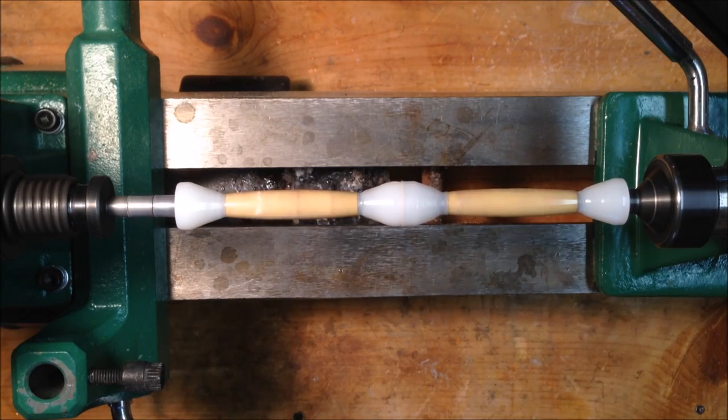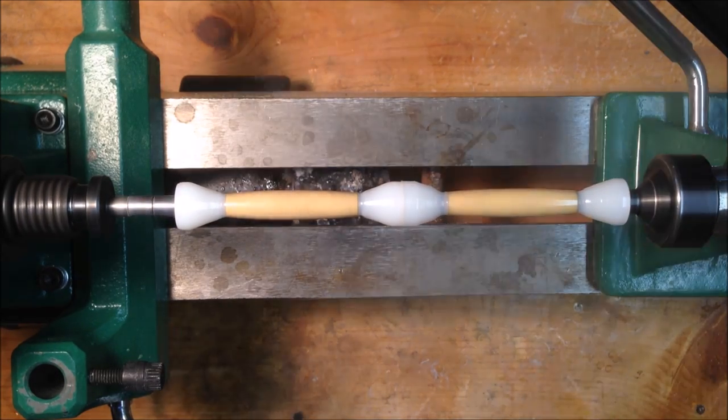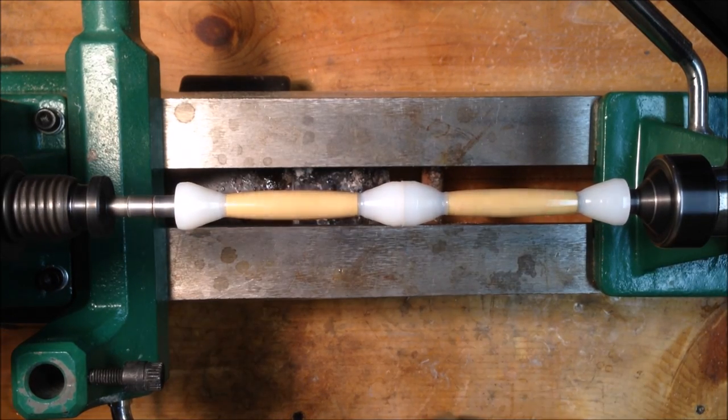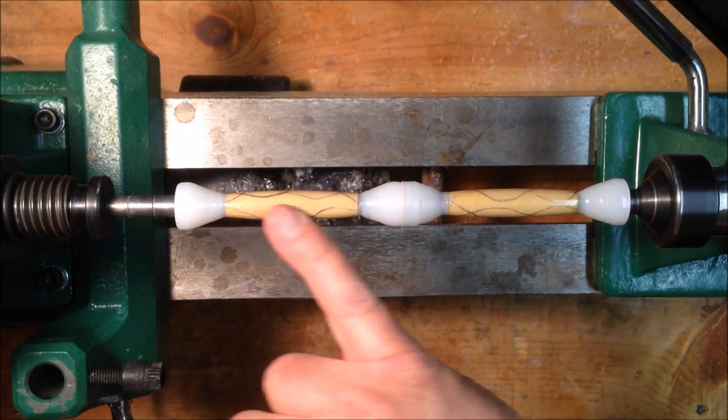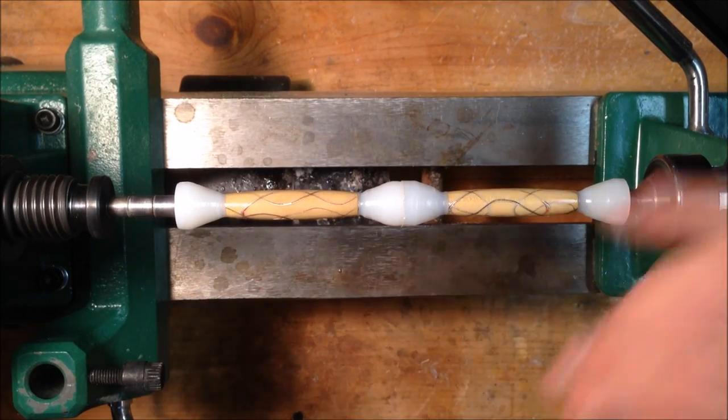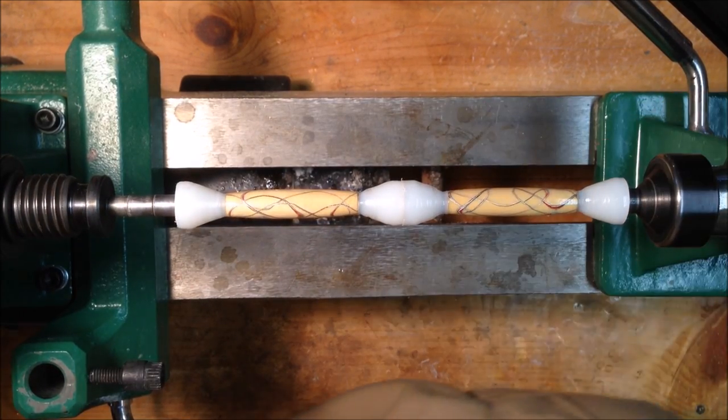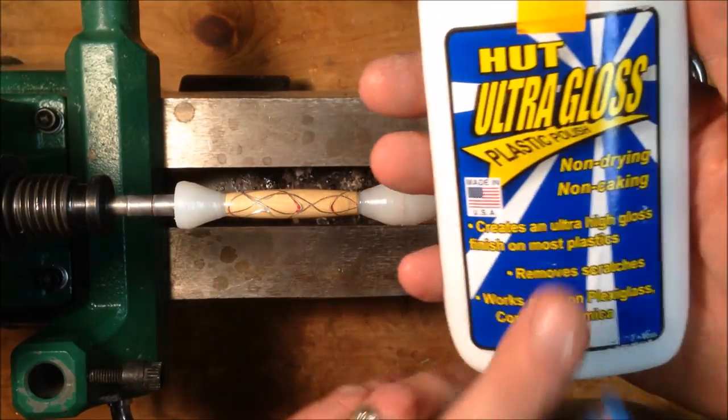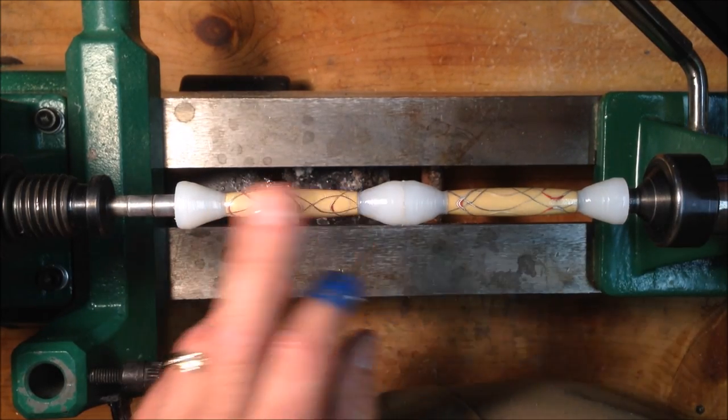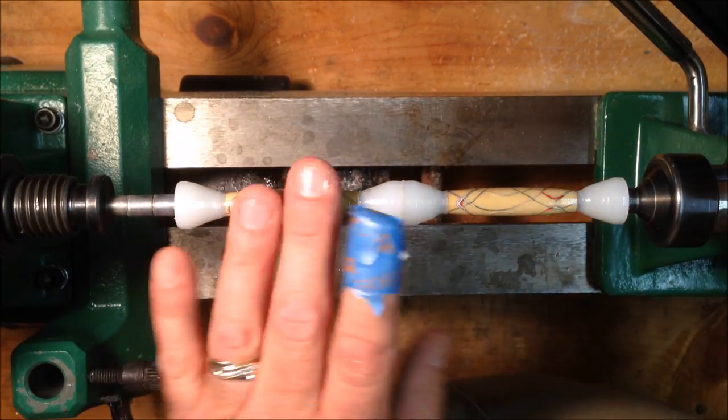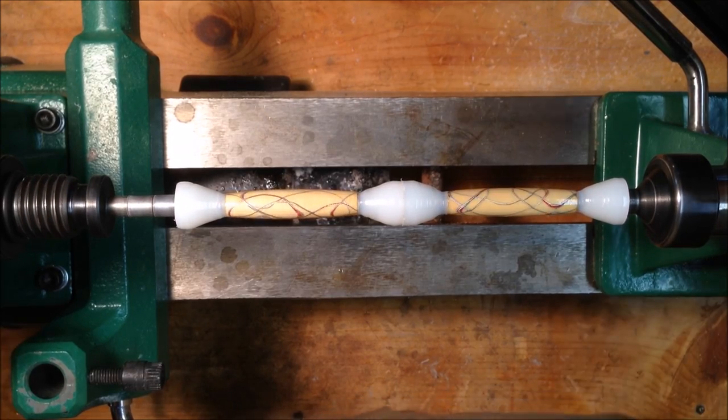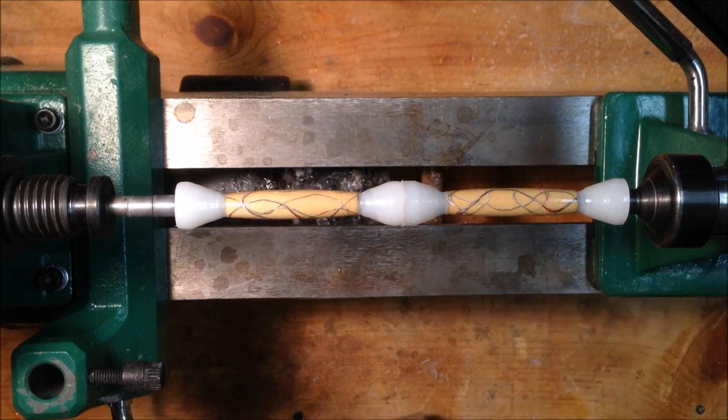It takes me longer to prepare the towel to apply the CA than it does to actually apply it. All right, now just for good measure, I'm going to go ahead and shoot this with a little bit of accelerator just to make sure everything dries. And let's have a look at it, wow. It looks amazing. I'm going to go ahead and polish it. I use a little bit of this Hutt Ultra Gloss to polish it. This is a plastic polish, but the CA glue forms a plastic shell on the blanks, so it does a really nice job of really making the blank pop. So, let me get a paper towel and we'll apply some of this.